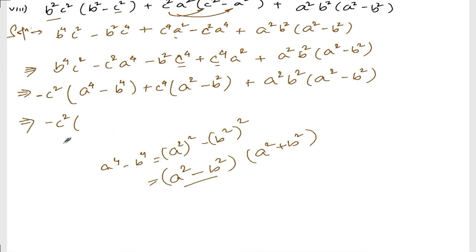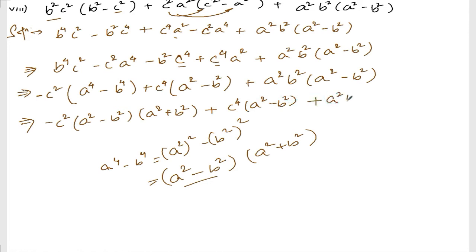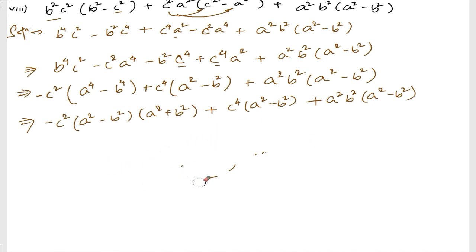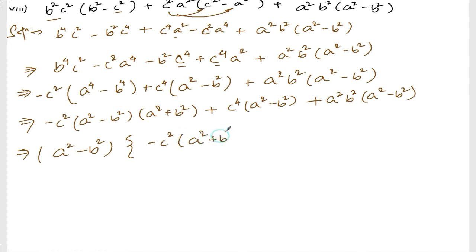So we have: minus c squared into a squared minus b squared times a squared plus b squared, plus c to the power 4 into a squared minus b squared, plus a squared b squared into a squared minus b squared.